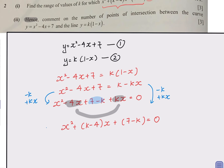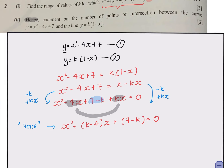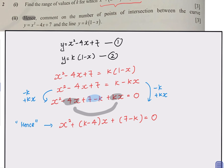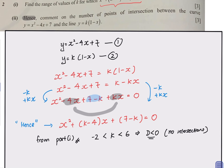From part one, if k is between negative 2 and 6, the discriminant is less than zero, meaning there are no real roots and therefore no intersection between the line and the curve.